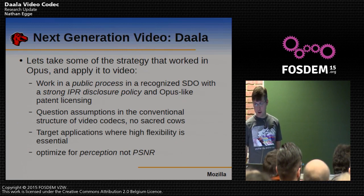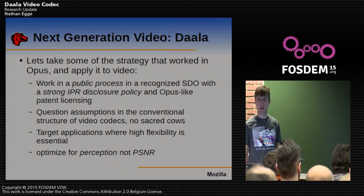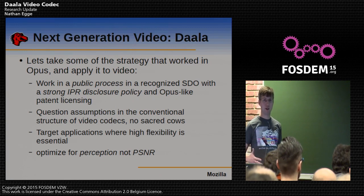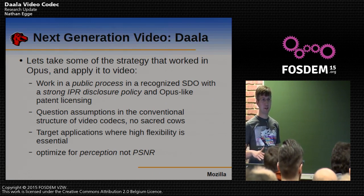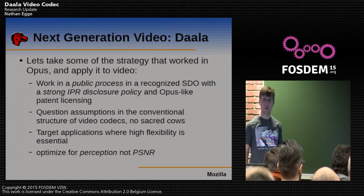We're going to do all of our work in a public process in a recognized standards body with a strong IPR disclosure policy. The work with Opus was done at the IETF. At the IETF, anybody who shows up to contribute is required to disclose any patents they have or may know about that read on that standard, and in that specific disclosure they're required to give the patent number. Because they give us a specific patent number, we can evaluate that patent and say whether it does or does not infringe on what we're doing — and if it does, we can work around it.